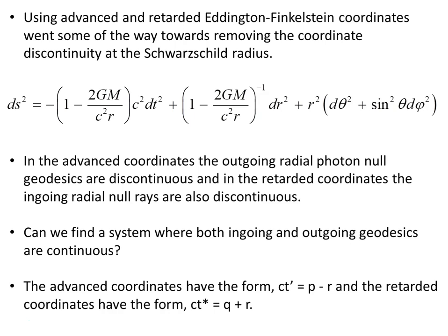To achieve that end, we can begin with the advanced coordinates that have the form ct′ = p − r, and the retarded coordinates which have the form ct* = q + r, where p and q are null coordinates.